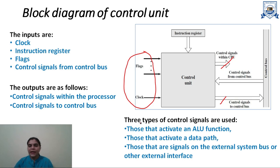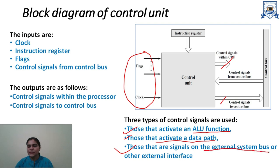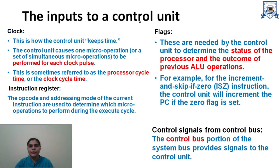The control unit provides three types of control signals: control signals that activate ALU functions, control signals that activate a data path, and control signals for the external system bus or external interface. The inputs to a control unit are clock, instruction register, flags, and control signals from the control bus.